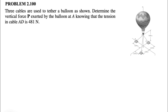Let's solve question 100 from the second chapter of the Beer & Johnston textbook. We have three cables used to tether a balloon. We need to determine the vertical force P exerted by the balloon at point A, knowing that the tension in cable AD is 481 Newtons.